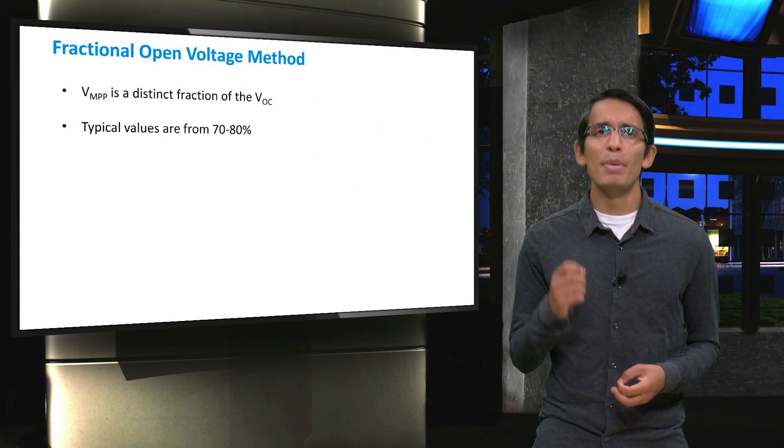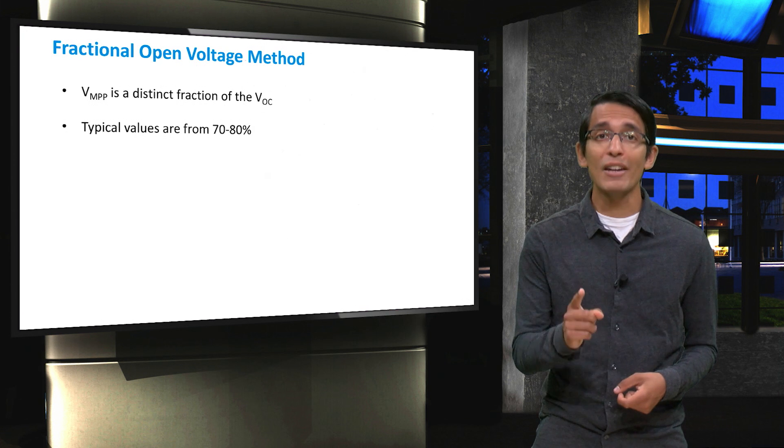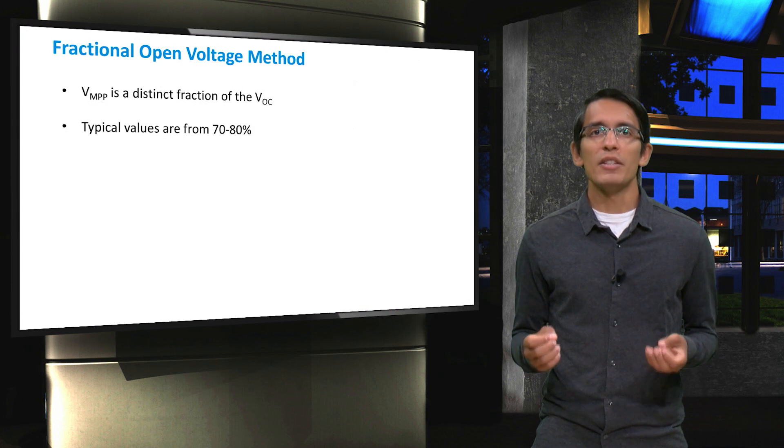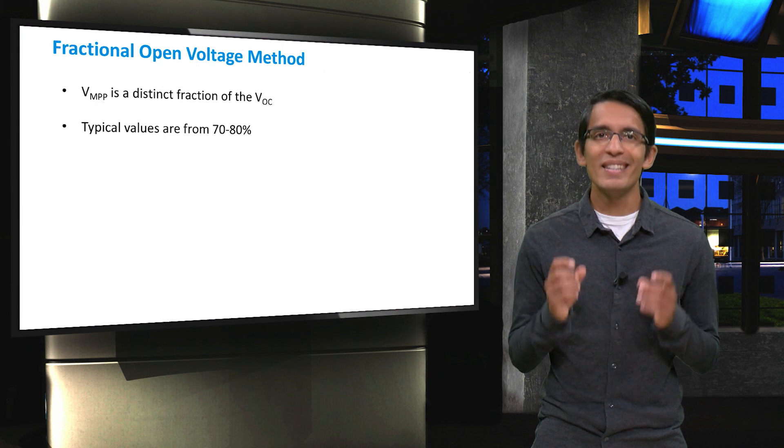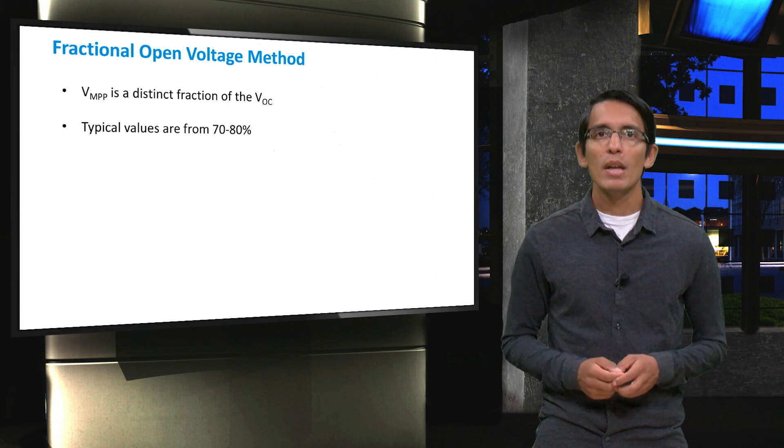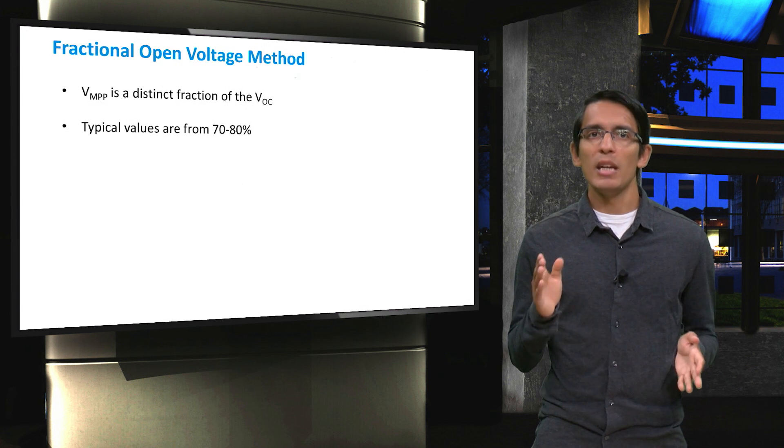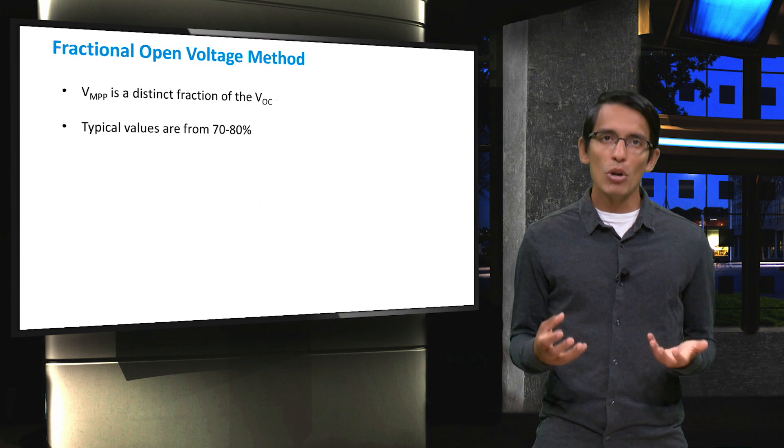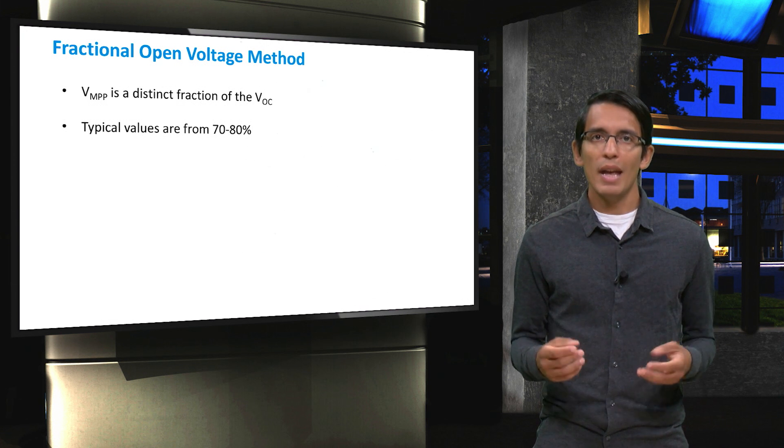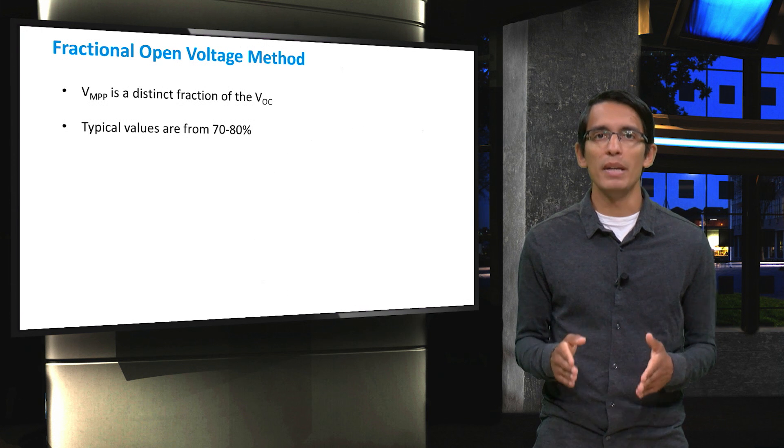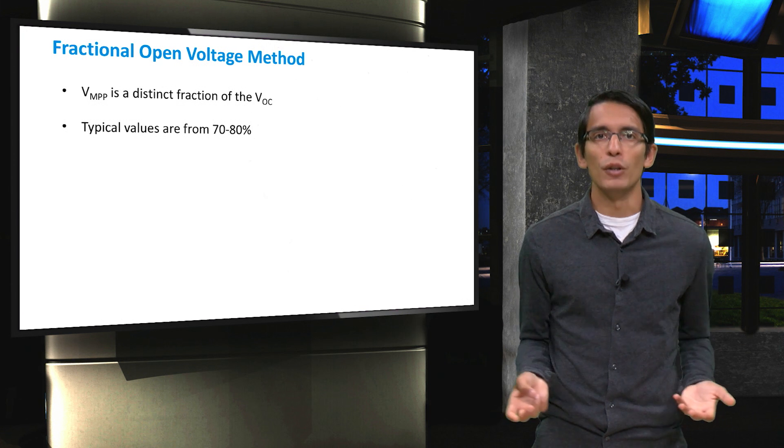The next technique adds a bit of complexity and is known as the fractional open voltage method. Here, we make the assumption that VMPP is a distinct fraction of the open circuit voltage of the PV panel or array. The value used here is usually between 70-80% of the open circuit voltage. This method is a bit more robust than the constant voltage method as the VOC will scale at approximately the same rate as the VMPP, thus making it more suitable for panel degradation and different illumination conditions.